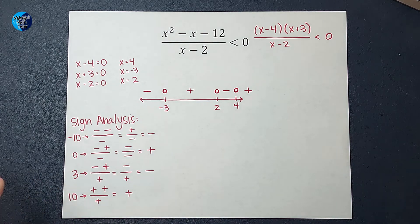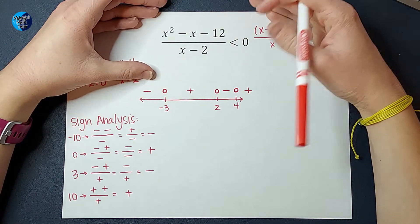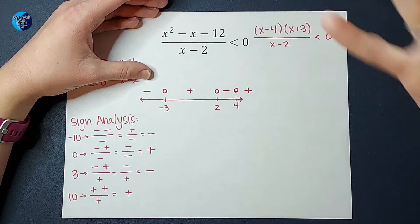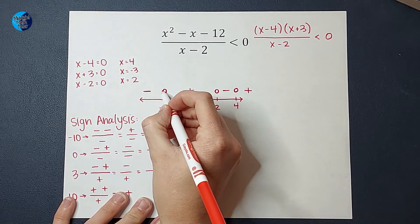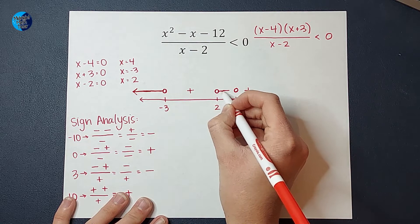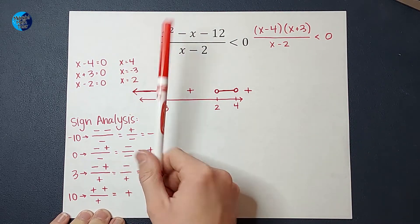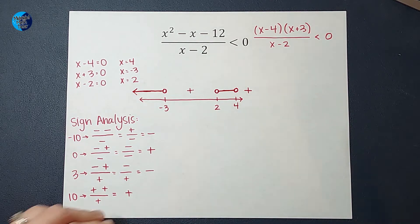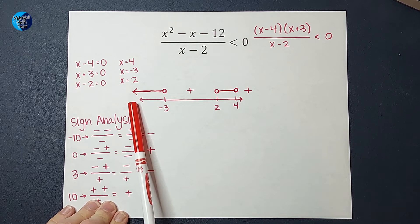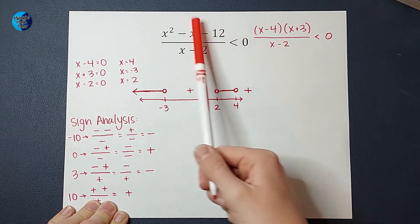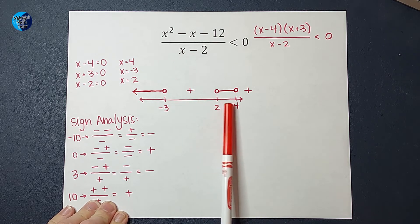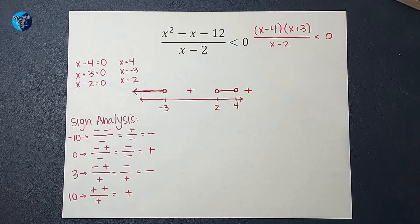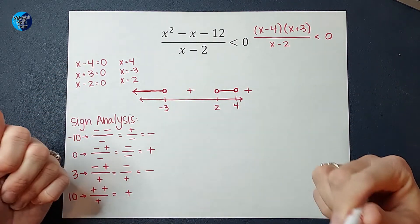From here, we figured out these negatives and positives. Now what? We're going to go back and look at this problem. We wanted to know where this is less than 0. What kind of numbers are less than 0? Negative numbers. And we already figured out where our negative numbers are. So I figured out that numbers less than -3, when I plug those in for x, my output is going to be a negative number. Same for between 2 and 4. So this number line represents my answer.